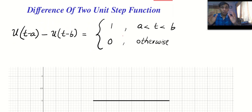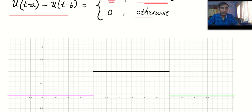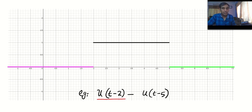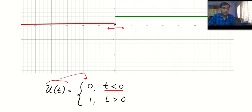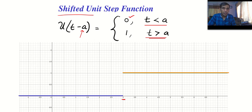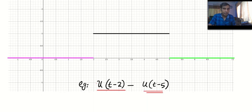Now comes one of the most important things: the difference between two unit step functions. The difference between two unit step functions generates the output 1 between two values a and b, and 0 otherwise. Most electronics and electrical engineers use functions as signals. The graph shows u(t − 2) minus u(t − 5), which generates 1 between 2 and 5.